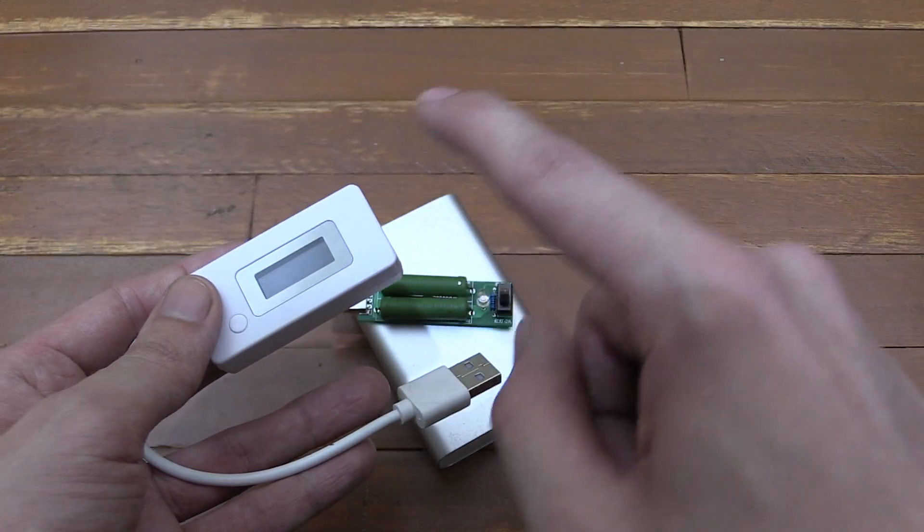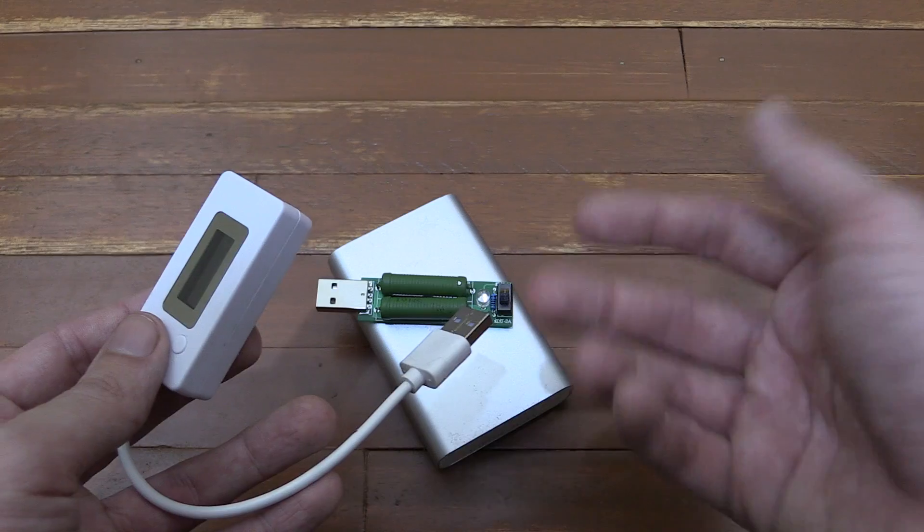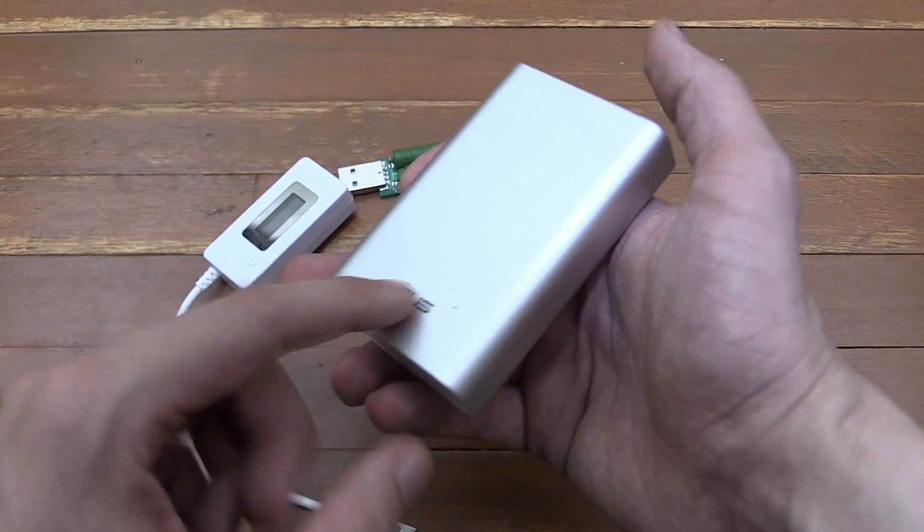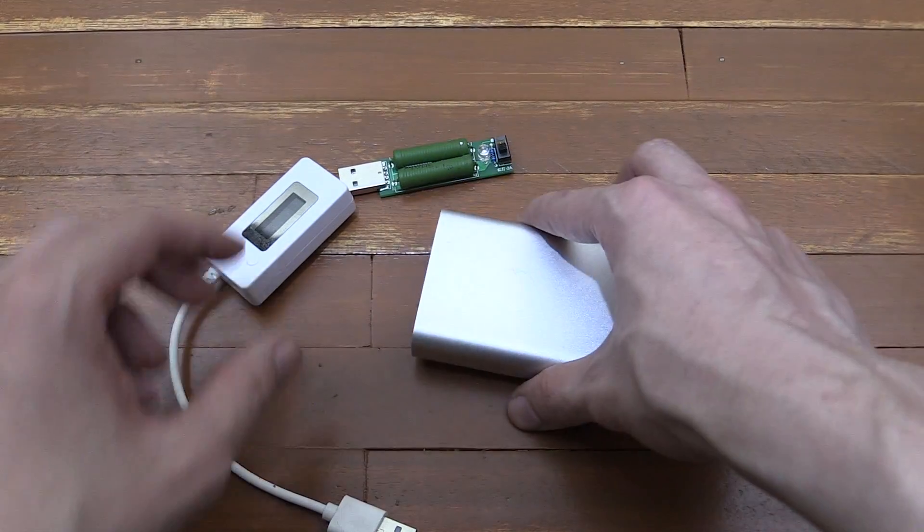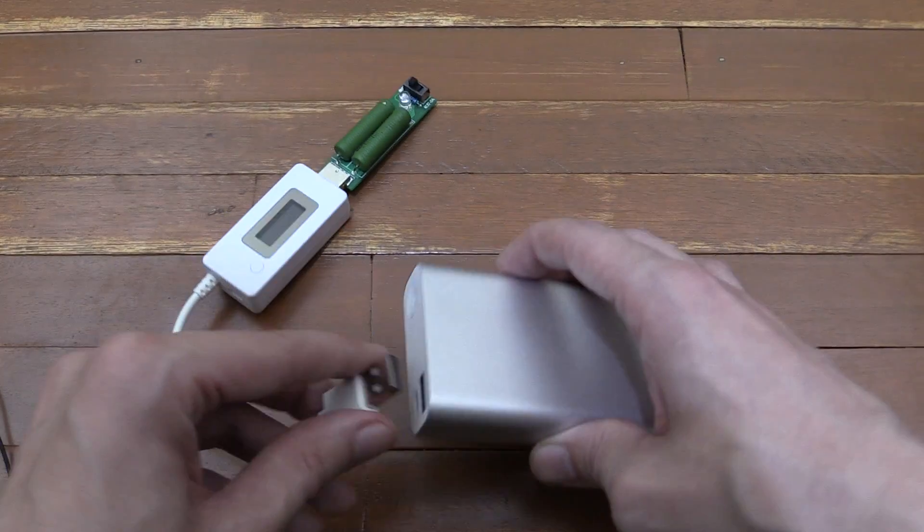And the next piece of equipment you need is a wattmeter like this, which can measure how much power is consumed over a period of time. Now this Asus Zen Power Pack has been fully charged, and I'm going to plug my dummy load into the wattmeter and then plug the wattmeter into the power bank.